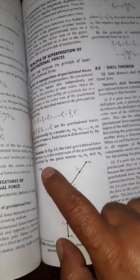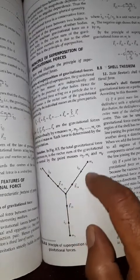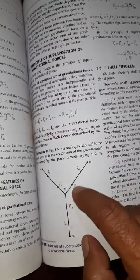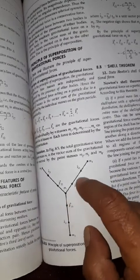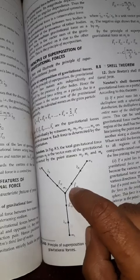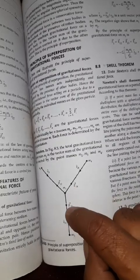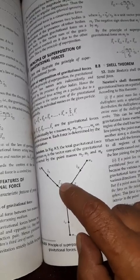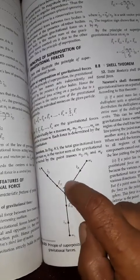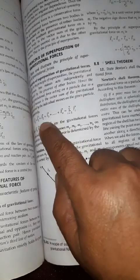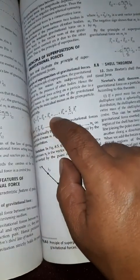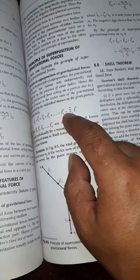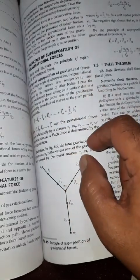So he is saying M2 is applying force on M1, M3 is applying force on M1, M4 is also applying force on M1. So direction you can check. Force applied on 1 by 4, force applied on 1 by 3, force applied on 1 by 2. So what will be the total force applied on M1? It is the vector sum of the individual forces applied on particle 1. So this is called superposition principle.